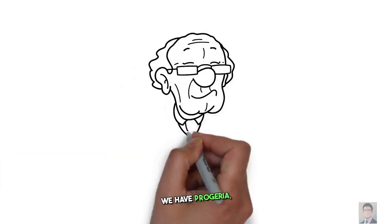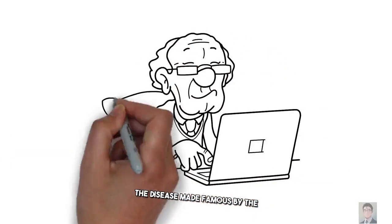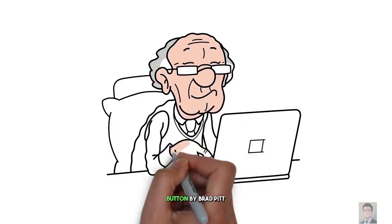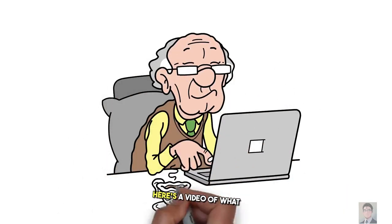At number 8, we have progeria, the disease made famous by the movie Curious Case of Benjamin Button by Brad Pitt. Here's a video of what it looks like.